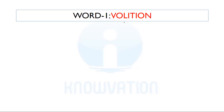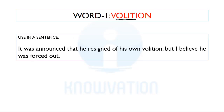The first word for today is Volition. We will first see its use in a sentence and then we will see its meaning. The sentence is: 'It was announced that he resigned of his own volition, but I believe he was forced out.' So it was announced that due to his own volition he left, but someone is saying he was actually forced out or thrown out.